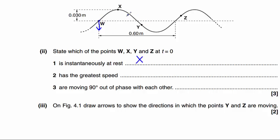Point y will be moving up and point z will be moving down. Now, w will be traveling faster than y or z because the maximum speed is reached as it passes through the midpoint.